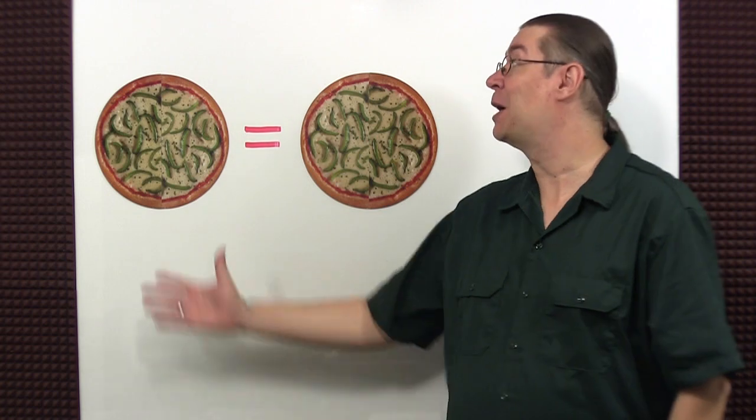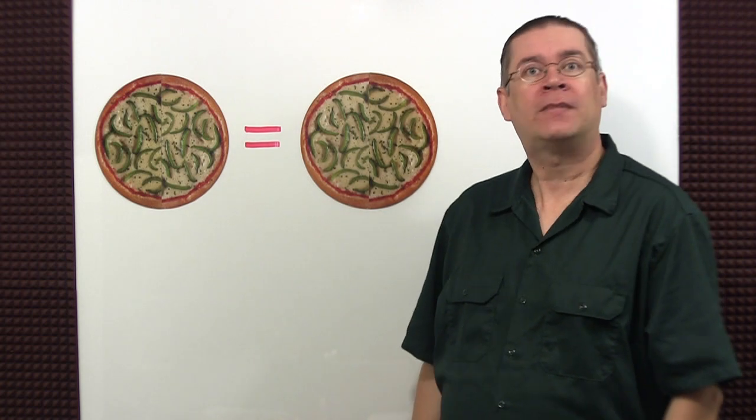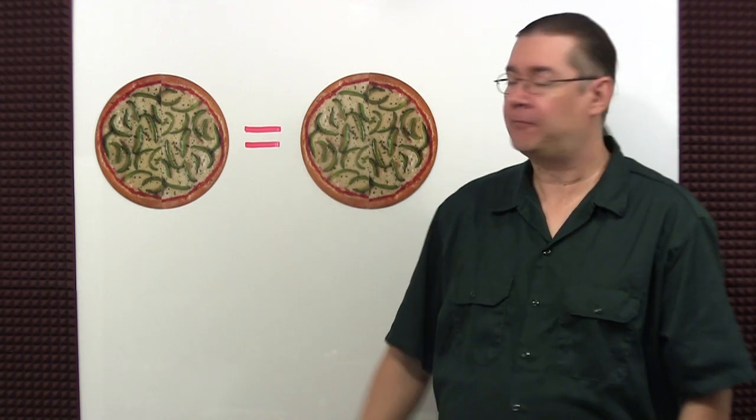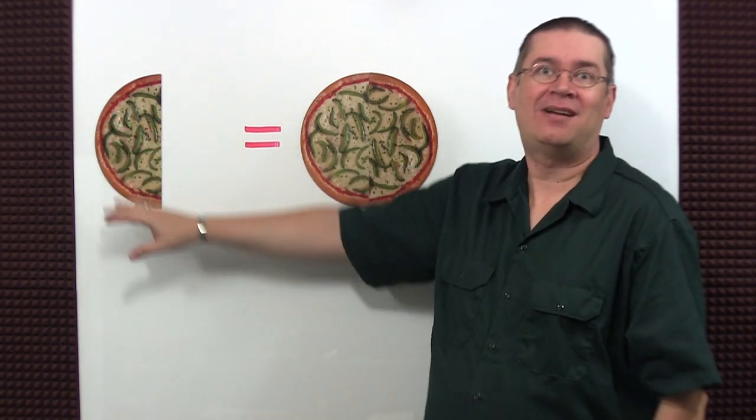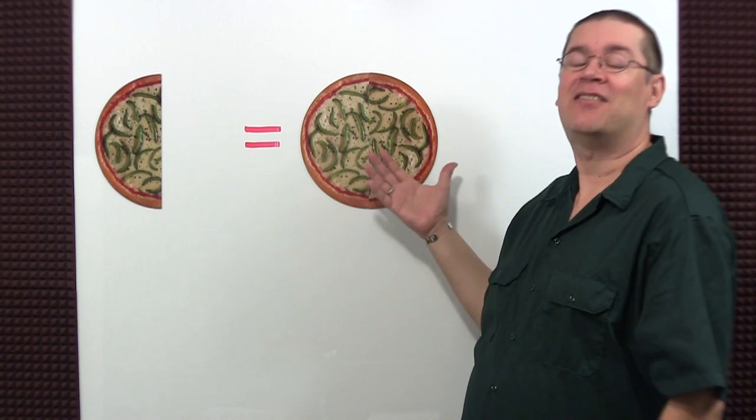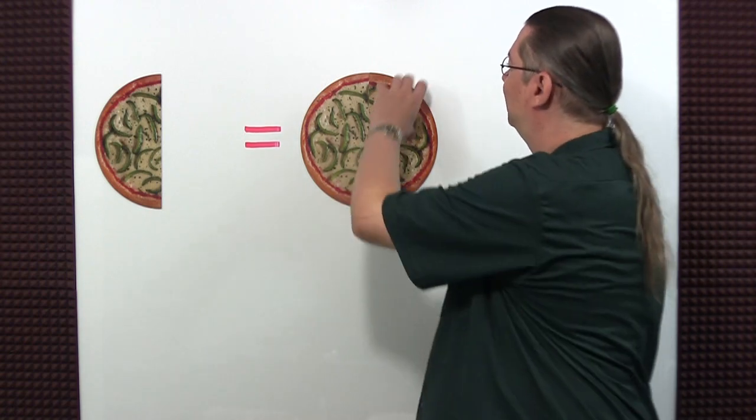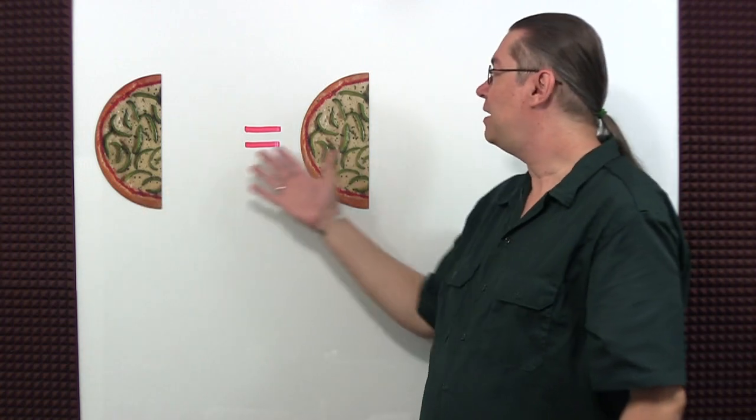Instead of scales, I'm going to use pizza to help visualize this property. Here I have two equal pizzas, but I just want half a pizza. Taking half of something is the same as dividing by two. So if I divided this part of the equation by two, I need to divide this part of the equation by two. Now each of these sides are the same. We have an equal amount of pizza.